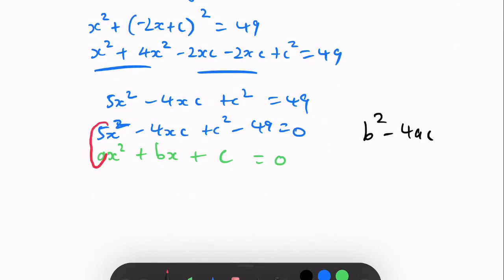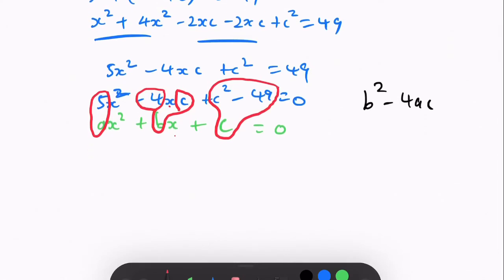So 5 is the a value. And then minus 4c is going to be the b value as x and x goes together. And then this whole entire c squared minus 49 is going to be the c value.